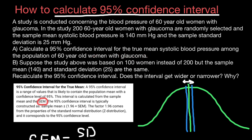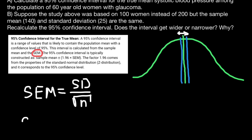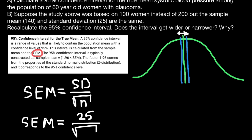For our first step, we need to know the sample size — we know that it is 200 women. We also need the sample standard deviation, which is 25 millimeters of mercury. So the standard error of the mean, SEM, in our case equals 25 divided by the square root of 200, and we get 1.77 millimeters of mercury.